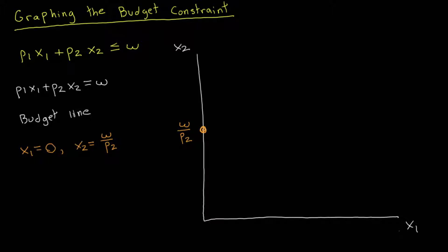Now let's look at the opposite scenario, where the consumer only purchases good 1 — that gives us the horizontal intercept. The horizontal intercept occurs when X2 equals 0. Solving for X1 by plugging in X2 = 0 and dividing each side by P1, we get X1 = W/P1.